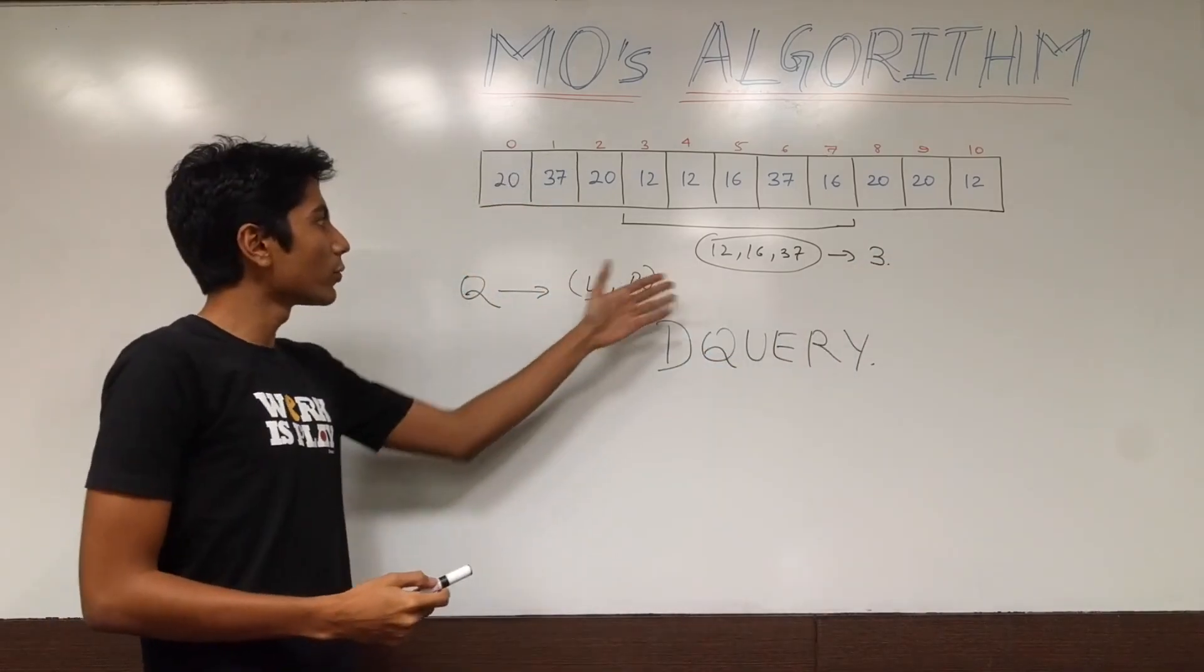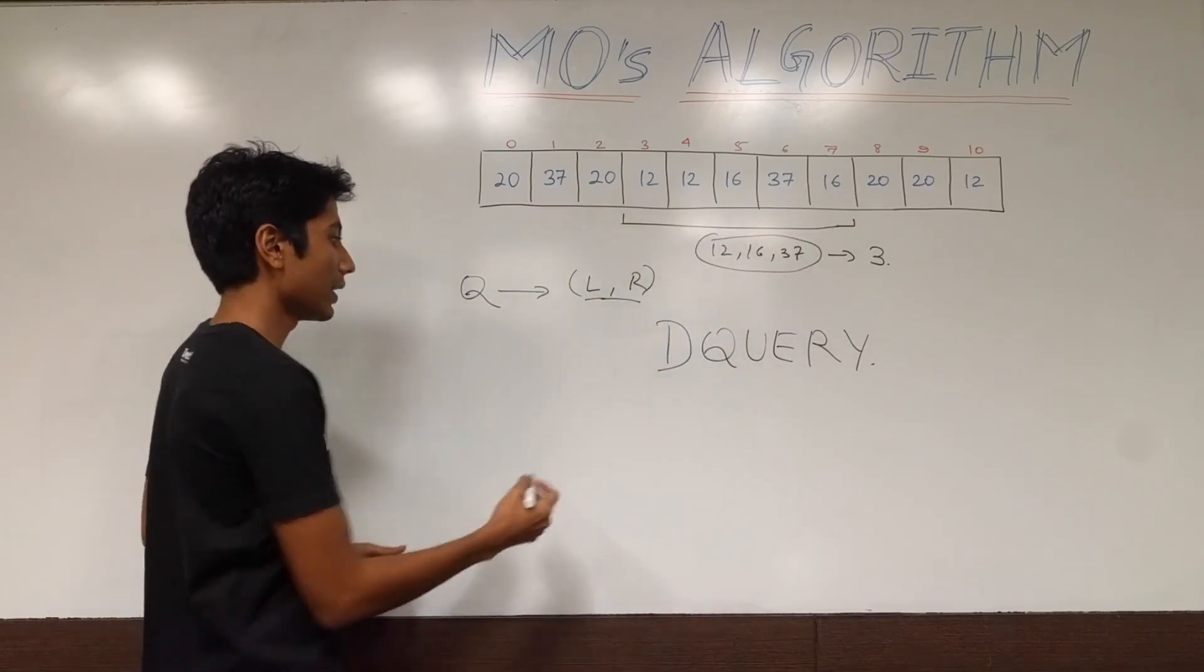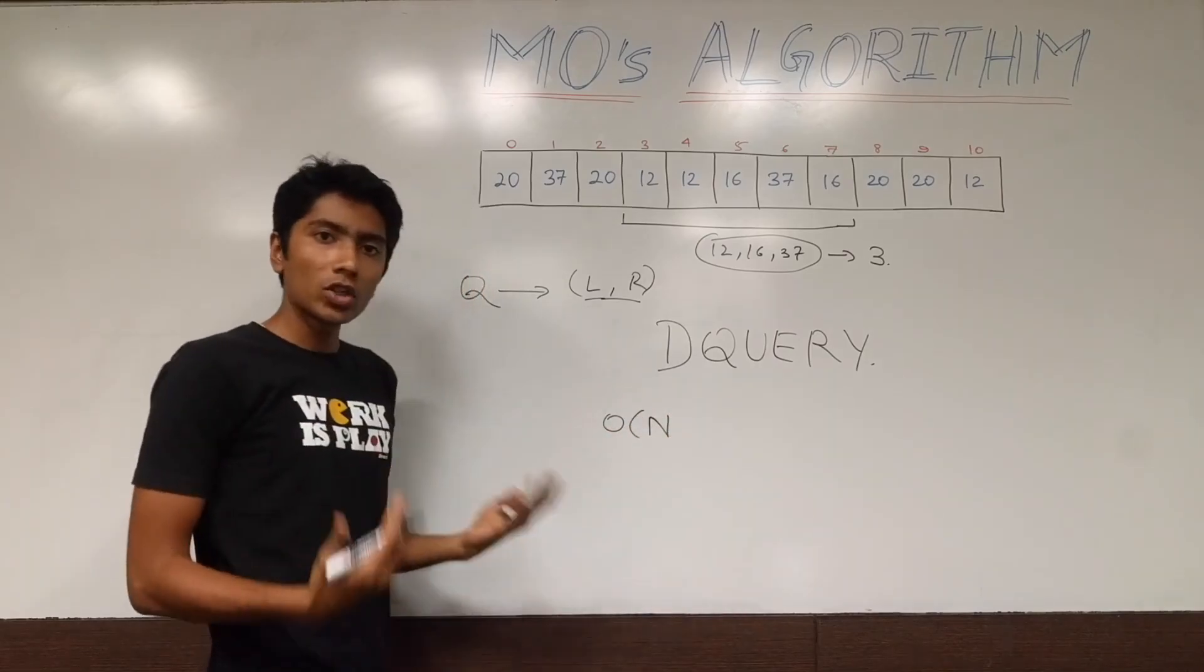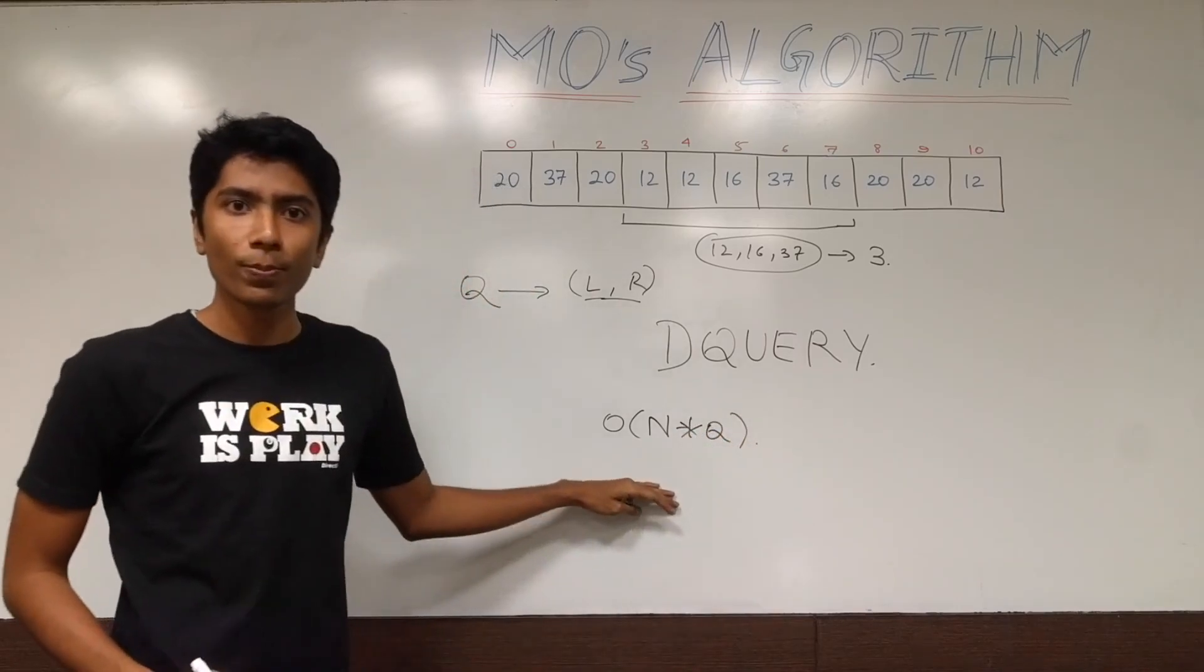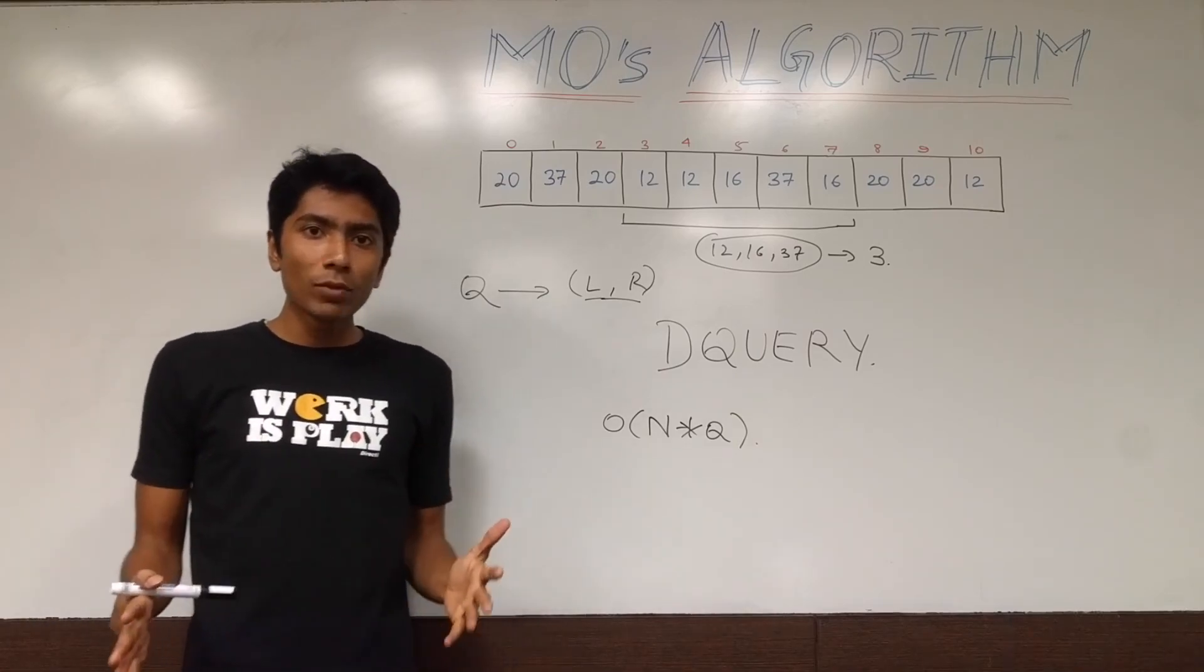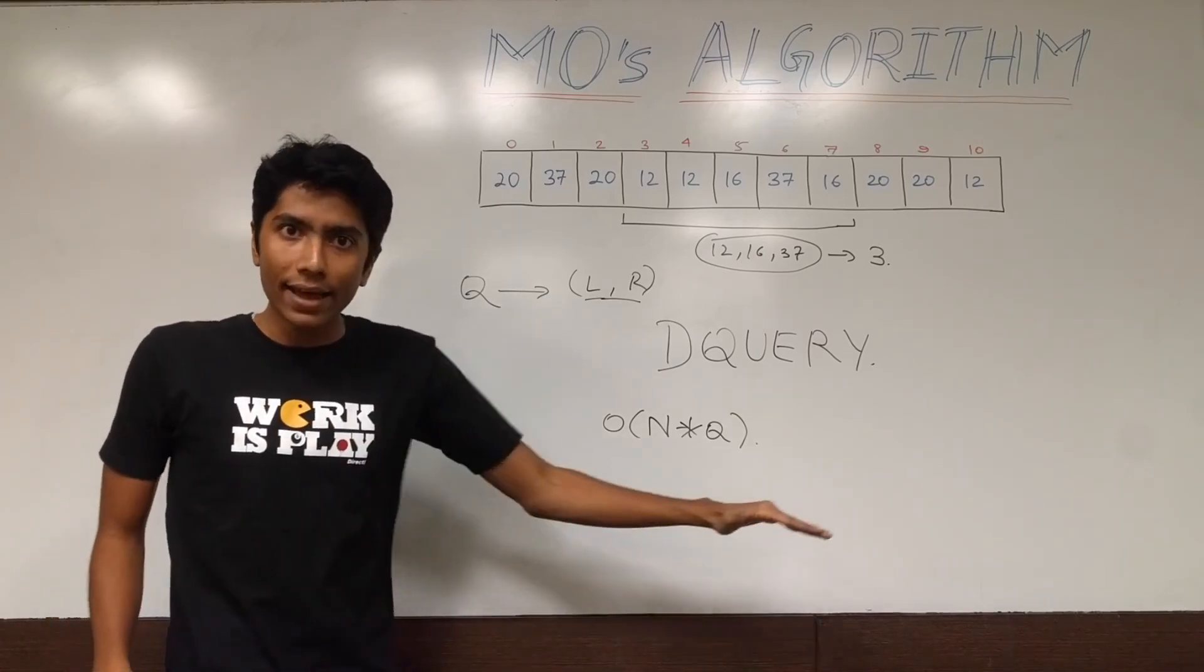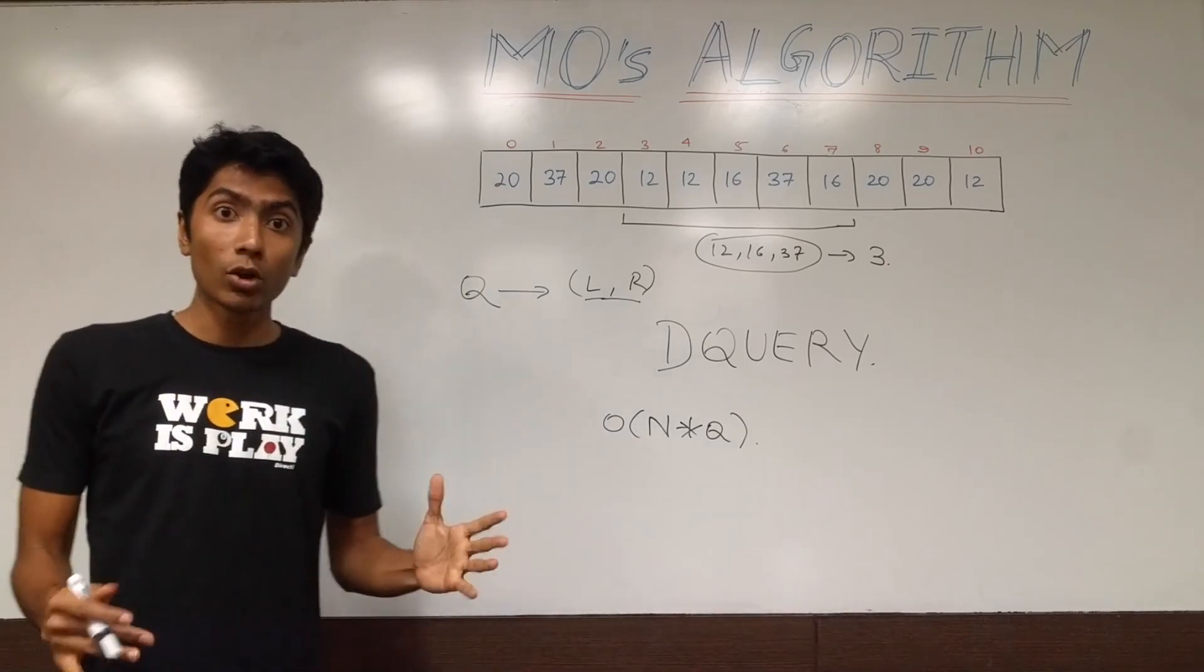So we have already seen the brute force approach in which you traverse the entire range and that is in the worst case order n because you have q queries that goes up to nq. We are going to be using the same logic of traversing the entire range but in a different way. So let's have a look at Mo's algorithm now.